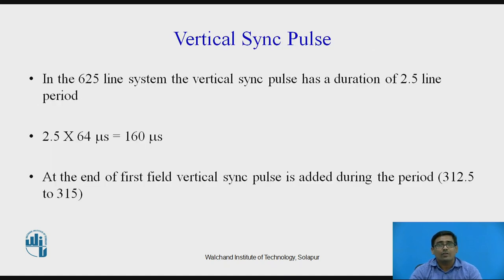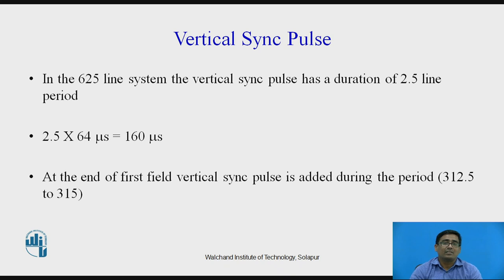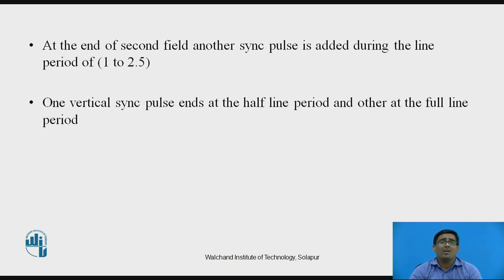Now for the vertical synchronization pulse: in the 625-line system, the vertical sync pulse has a duration of 2.5 line periods, that is 2.5 × 64 microseconds = 160 microseconds. At the end of the first field, the vertical sync pulse is added during line period 12.5 to 315. At the end of the second field, another sync pulse is added during line period 1 to 2.5. One vertical sync pulse ends at a half line period and the other at a full line period.